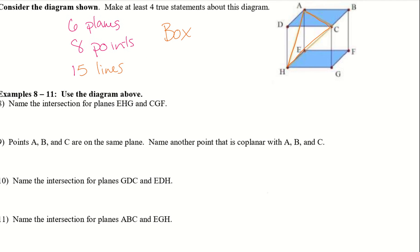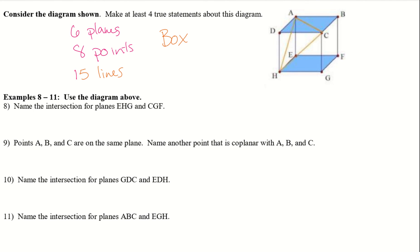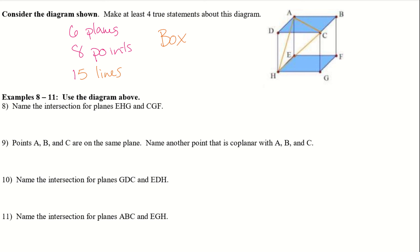Using the diagram above, we want to answer these questions. Name the intersection for planes EHG and CGF. I would suggest highlighting the planes you're working with. EHG is down here — that's this plane. And then CGF is this plane right here. They're going to intersect right here, so we write GF — or you could put FG.